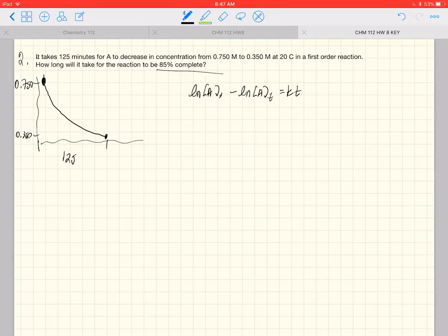Okay, and we are trying to find what k is. So if we divide both sides of this equation by time, k is equal to ln[A]₀ minus ln[A]ₜ divided by t. And we want to plug in these values here.